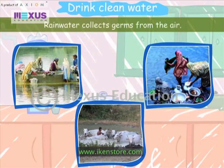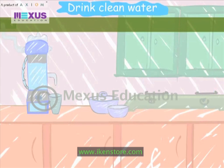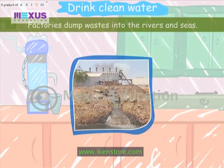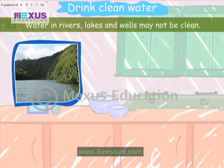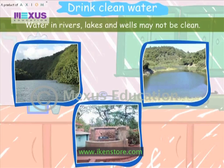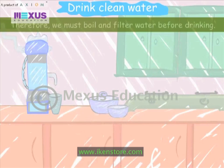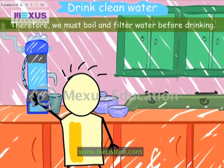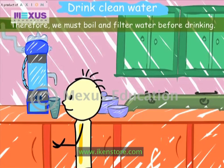Rainwater collects germs from the air. Factories dump wastes into the rivers and seas. Water in rivers, lakes, and wells may not be clean. Therefore, we must boil and filter water before drinking.